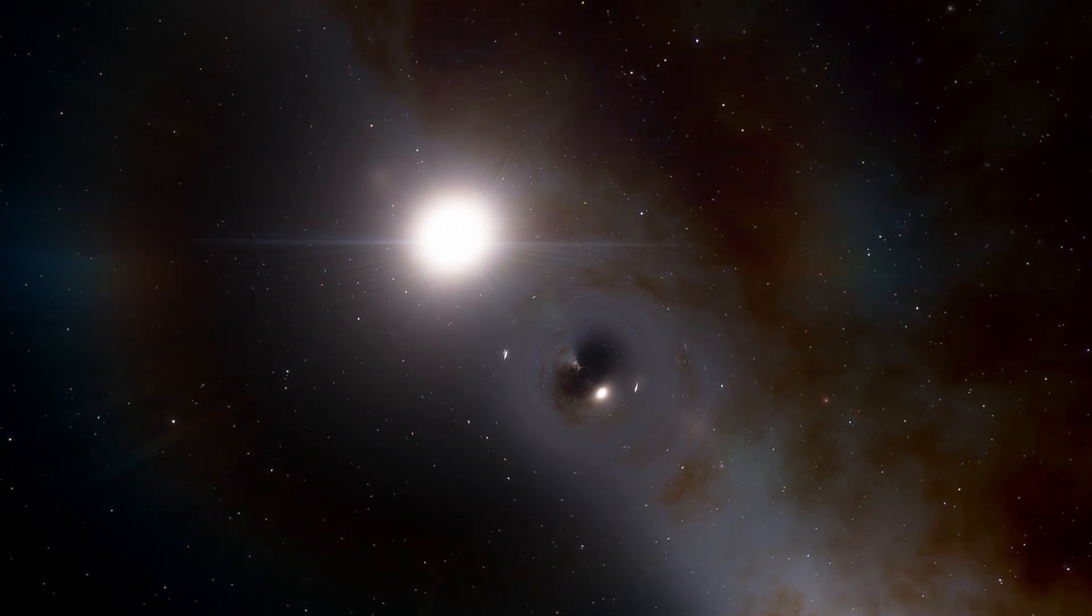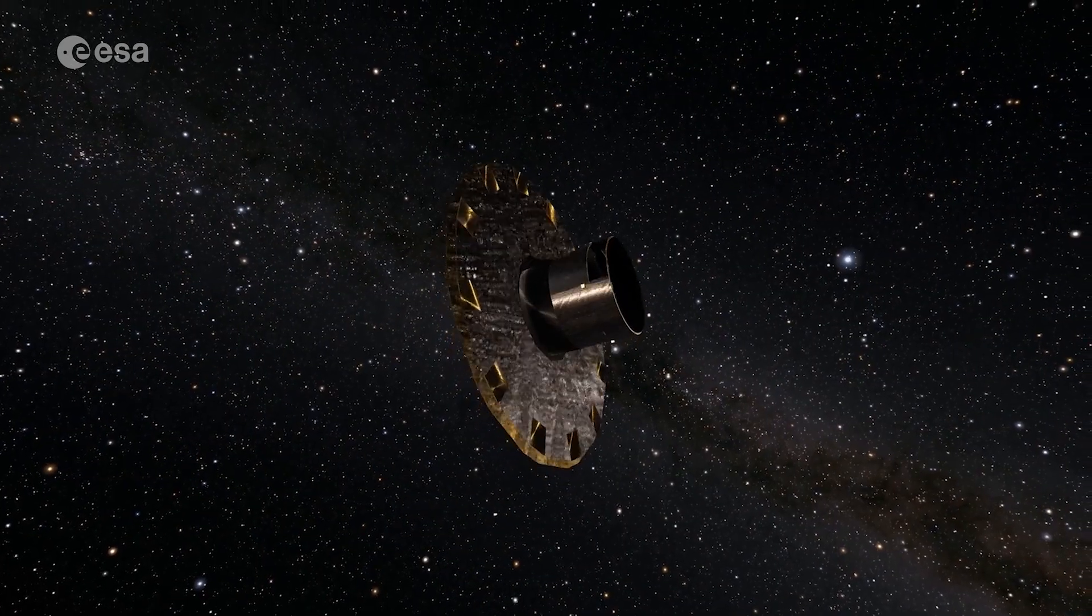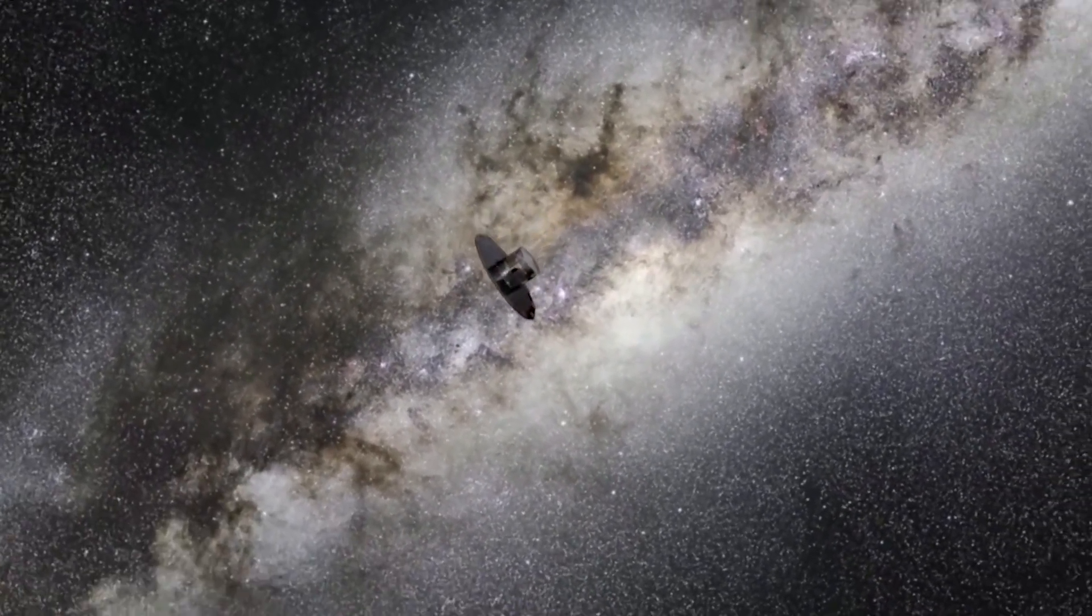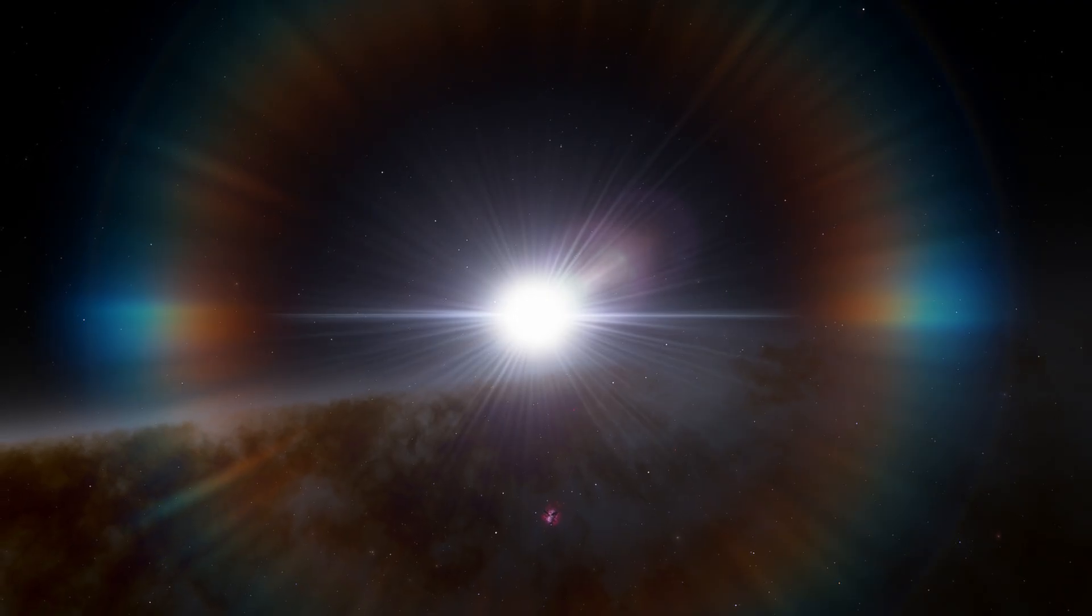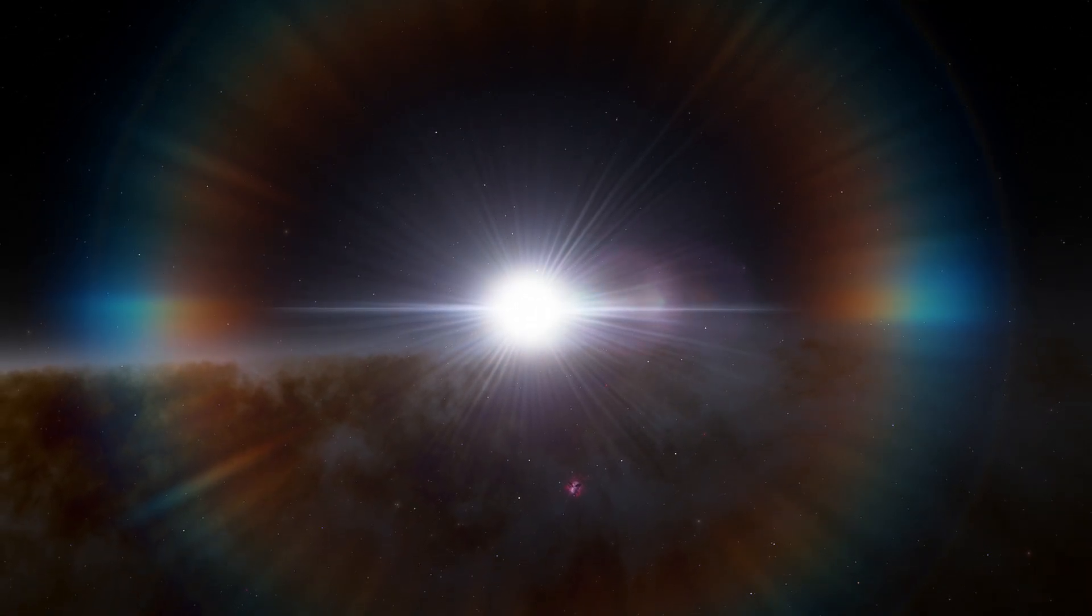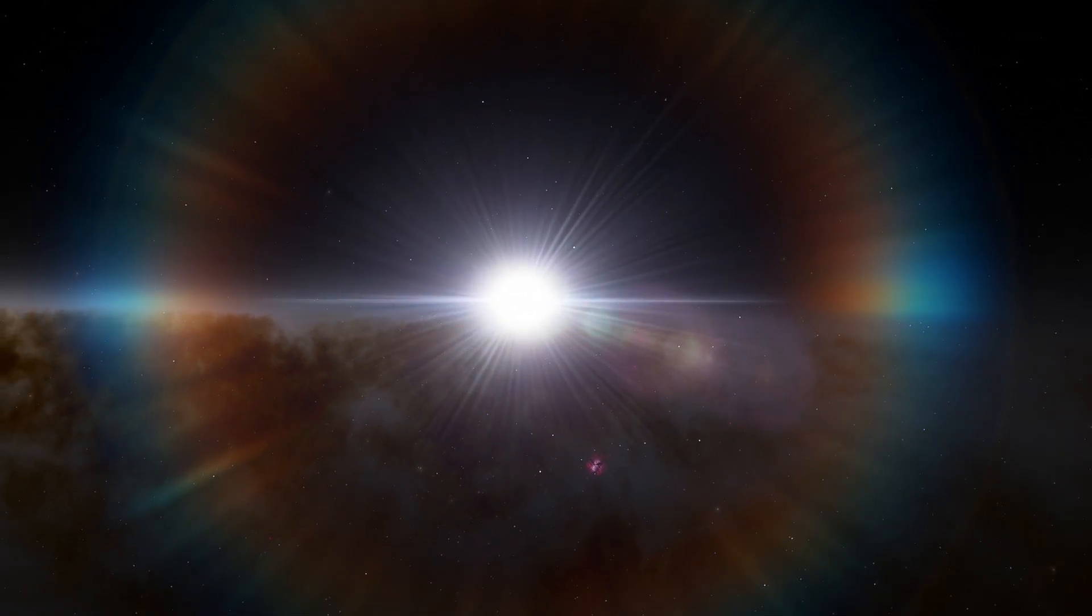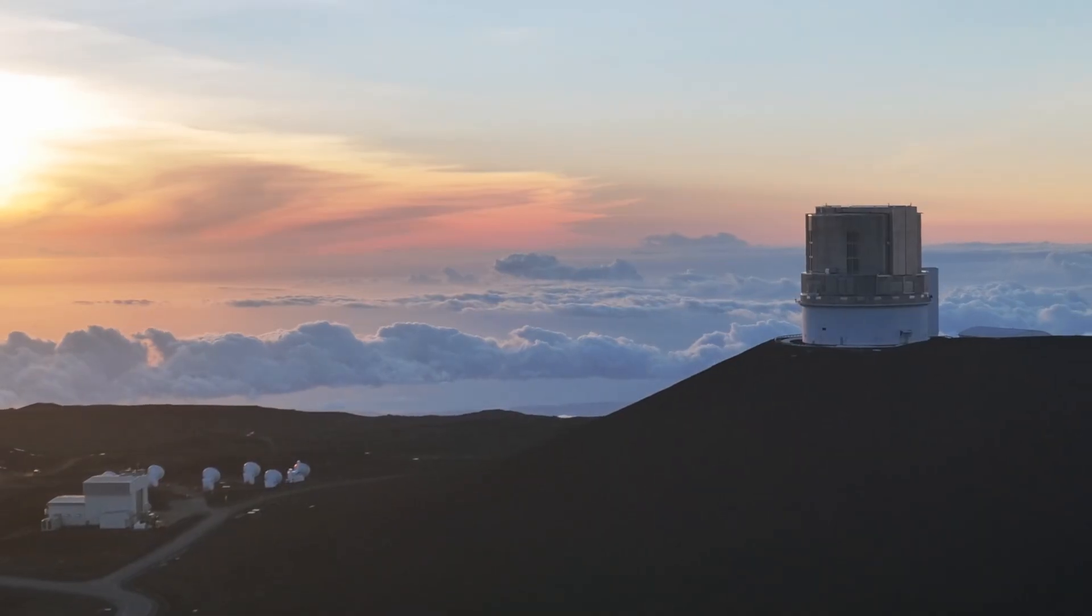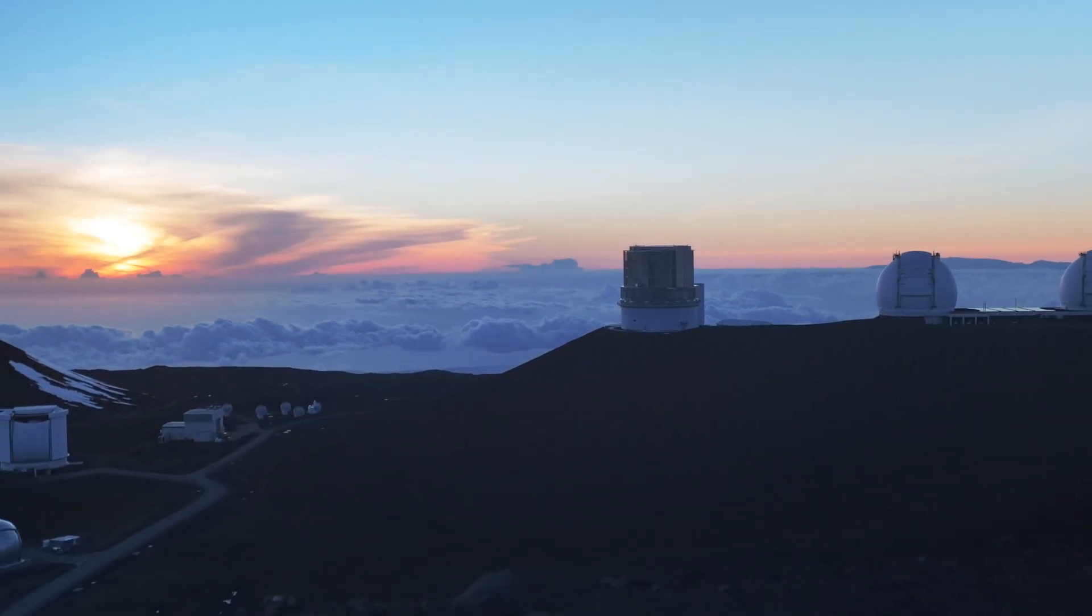Because Gaia BH1 is tiny and not feeding on its companion star, it's a tough candidate to spot. But scientists analyzed data from Gaia spacecraft, which is precisely mapping the positions, speeds, and trajectories of about two billion stars in our home galaxy. One of those stars is the sun-like star orbiting Gaia BH1. The research team found tiny irregularities in its motion, which indicated something massive and unseen was tugging on it gravitationally. A black hole was the most likely candidate, but it wasn't clear, so researchers observed the star with more ground-based instruments, allowing them to make more detailed measurements.